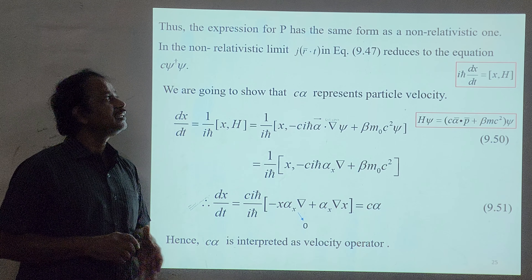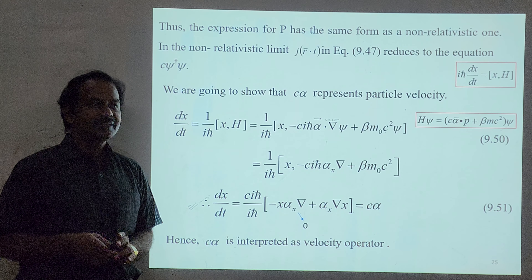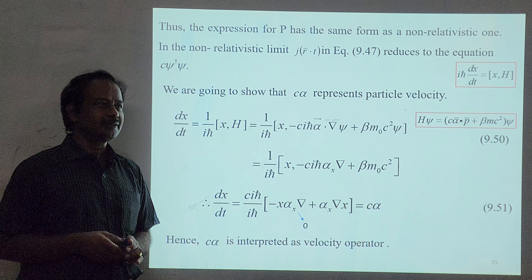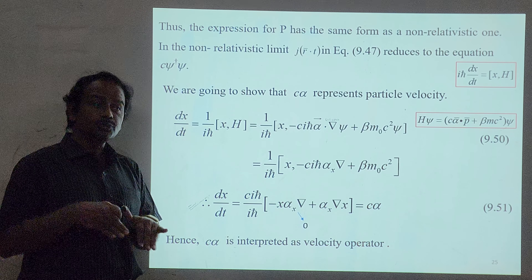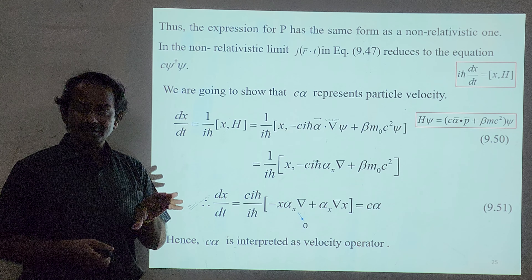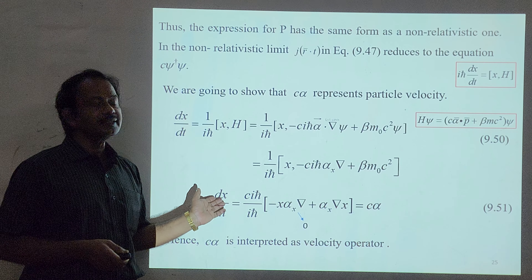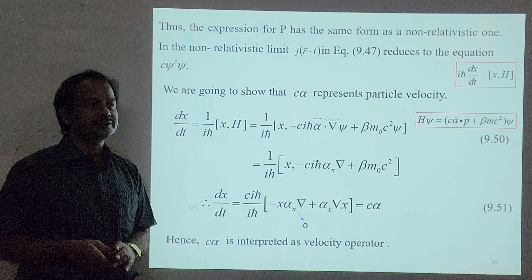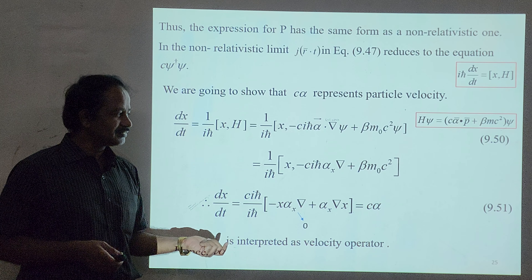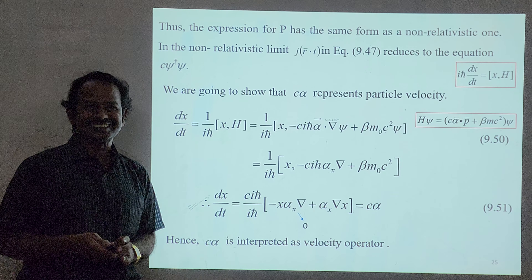In this class we discussed in detail the relativistic invariance of the Dirac equation under Lorentz transformation — a very important topic. We transformed through matrices from one coordinate system into another and obtained the same Dirac Hamiltonian equation. In the next session we discussed expressions for charge and current densities. Thank you students, bye.